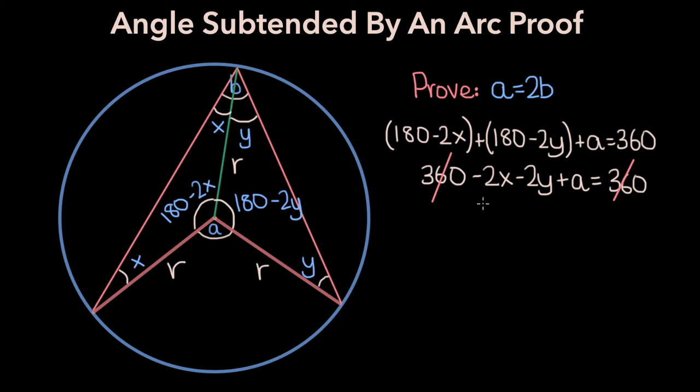And if you add 2X plus 2Y to both sides, you get that A is equal to 2X plus 2Y, and if you factor out the 2, you get that A is equal to 2 times X plus Y.